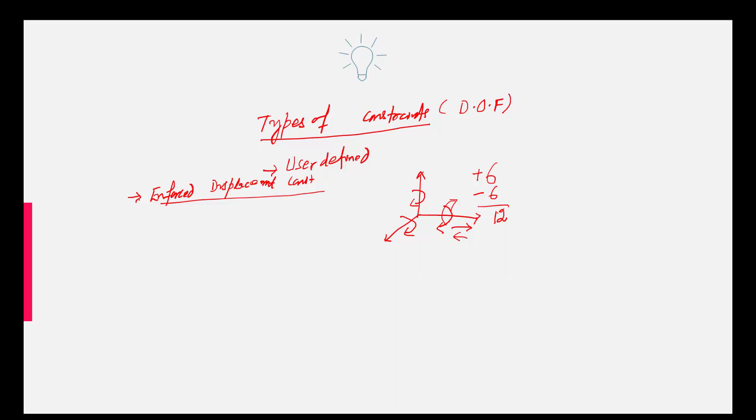One of the very important and frequently used types of constraint is known as the fixed constraint. The fixed constraint fixes all six degrees of freedom, and the fixed constraint displacement equals zero.